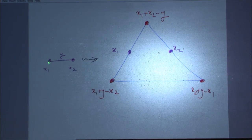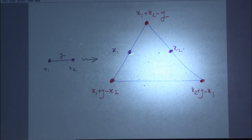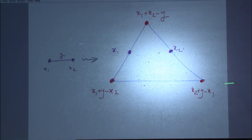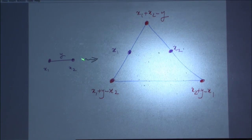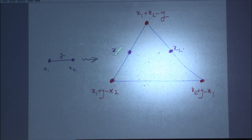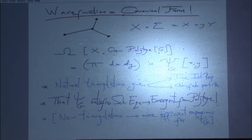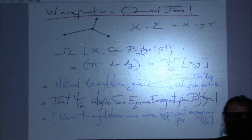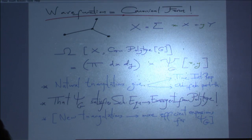Just from the rules, if I take a graph and label the variables associated with the vertices and edges — the vertices get variables xᵢ and the edges get variable y — then naturally I get the following vertices for the cosmological polytope. For every edge of the graph, you get three vertices of the cosmological polytope: x₁ + y − x₂, x₂ + y − x₁, and x₁ + x₂ − y. The polytope lives in a space whose dimensionality equals the number of edges plus vertices of the graph. The claim is that the canonical form of the cosmological polytope is the wave function associated with that graph.